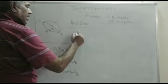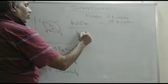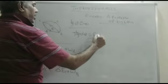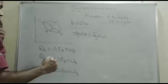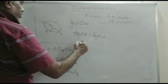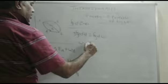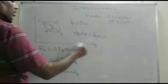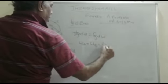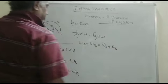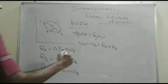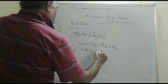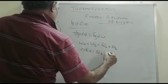Now, the cyclic integral of δQ is equal to the cyclic integral of δW. This gives us δE_C equal to Q_A minus W_A.